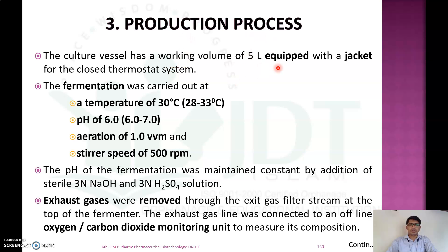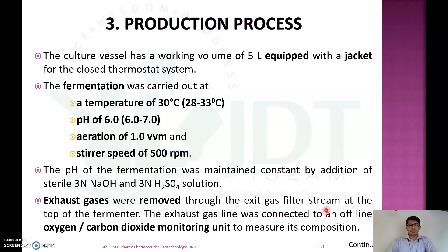The production is carried out in a culture vessel with a working volume of 5 liters, equipped with a jacket for a closed thermostat temperature system. Fermentation is carried out at 30°C and pH 6, with aeration of 1 volume per volume per minute and an agitation speed of 500 RPM. If required, the pH is adjusted using 3N NaOH or 3N sulfuric acid. Exhaust gas is removed through an exit gas filter, and the exhaust gas line is connected to an offline oxygen/carbon dioxide monitoring unit to measure its composition.